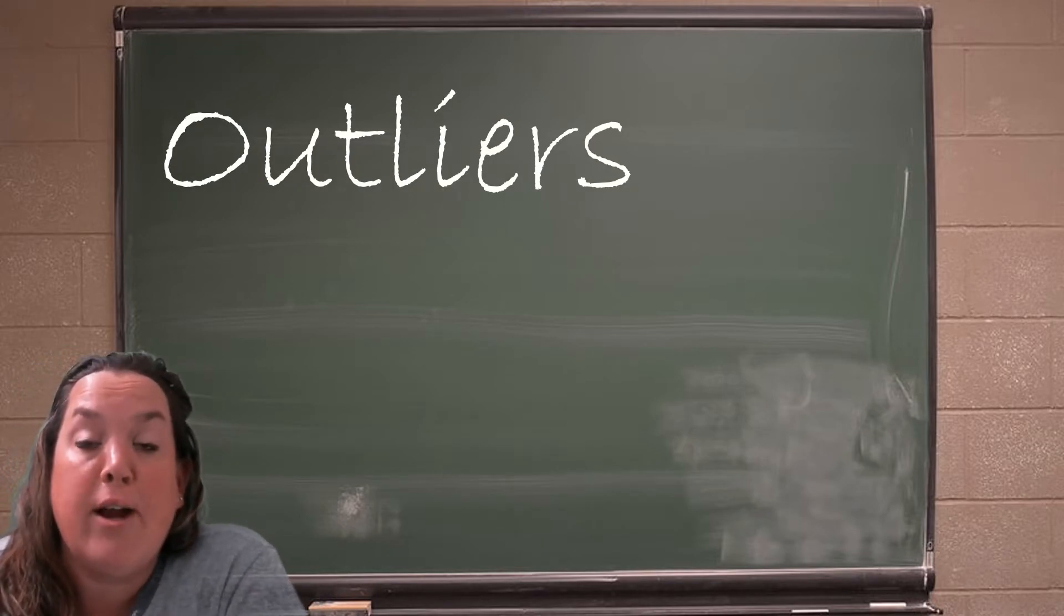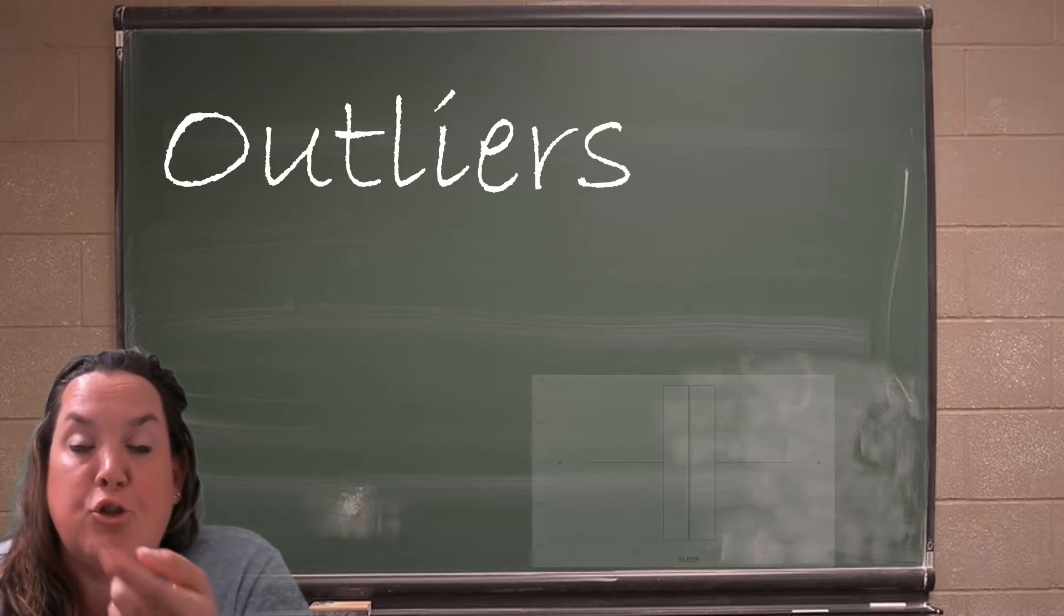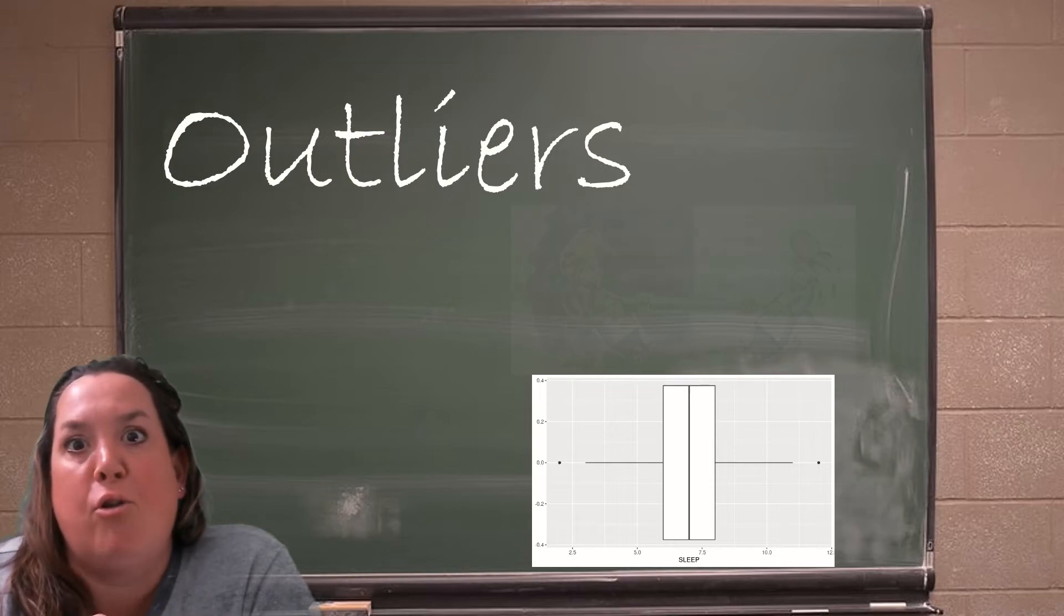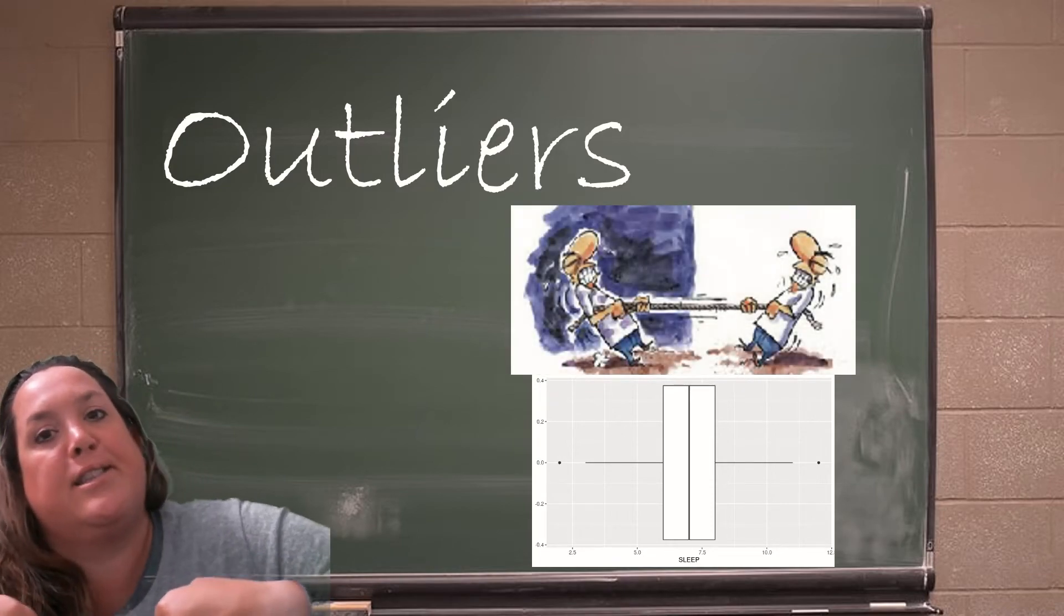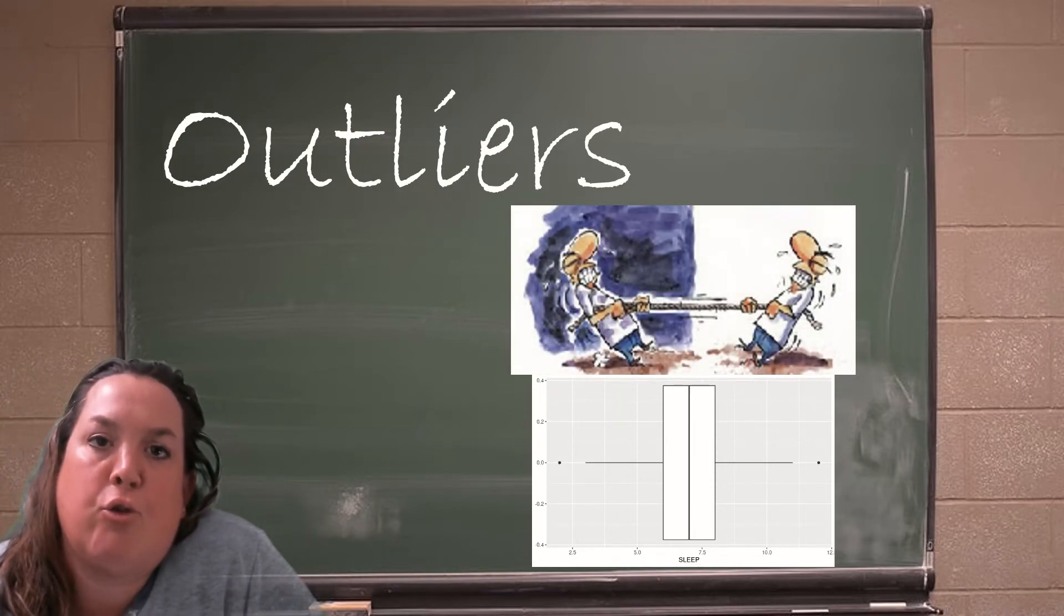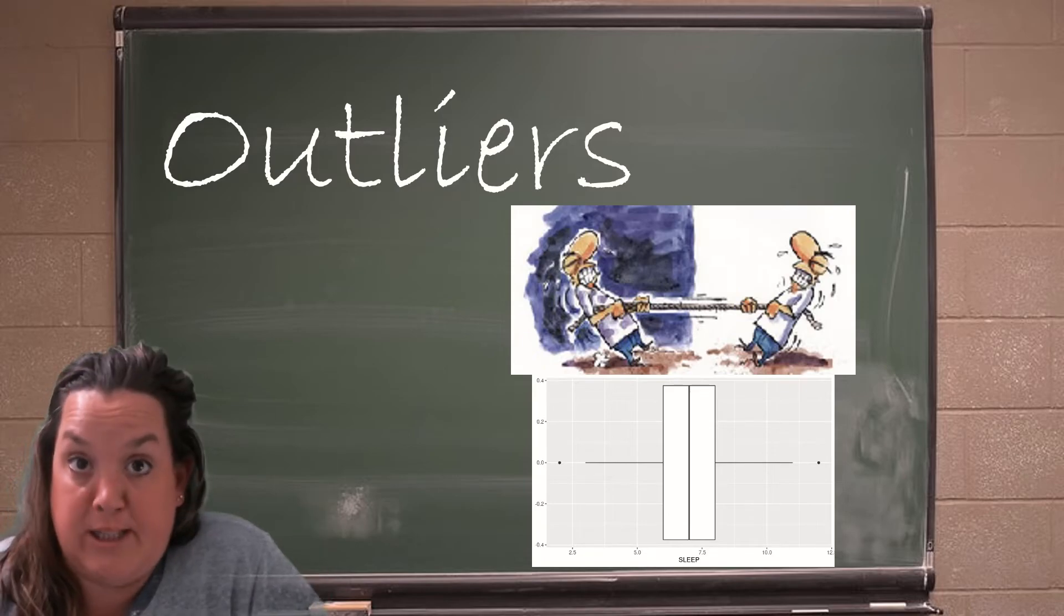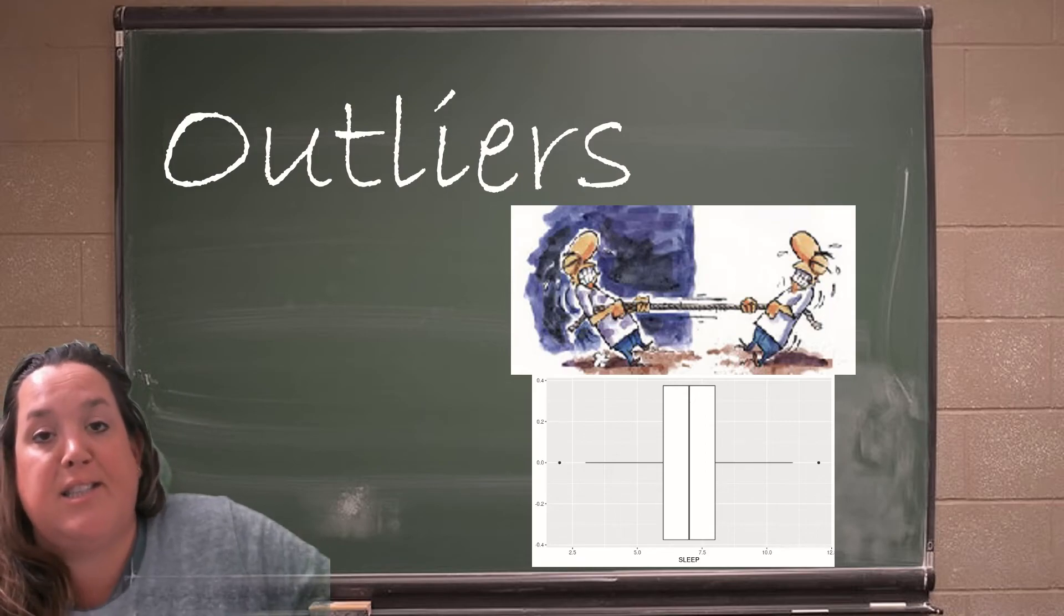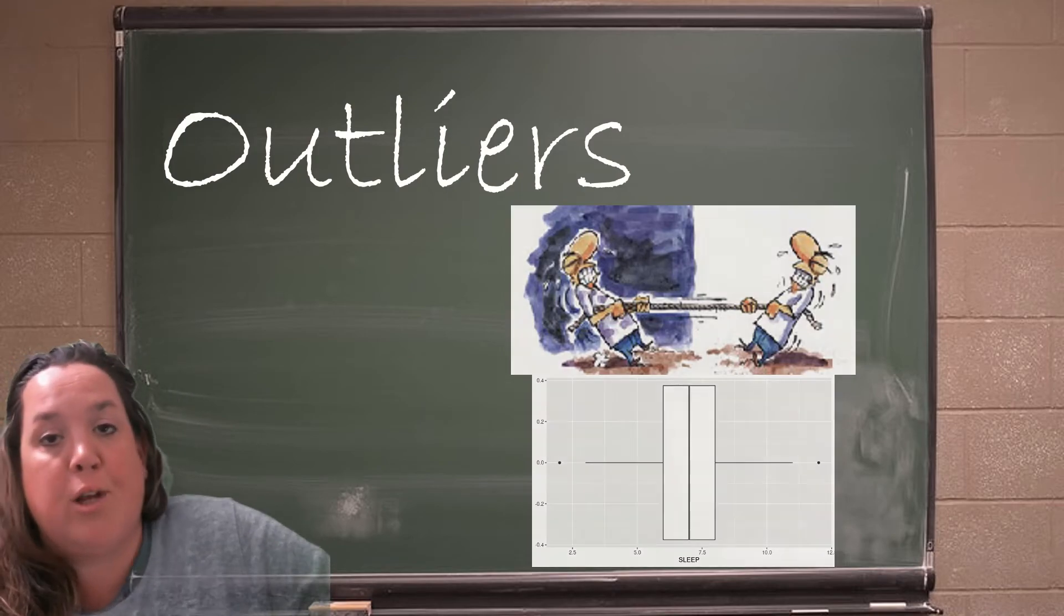So if you have outliers that are on either end of the distribution, you could think of that as like a game of tug of war. And those measurements would be pulling against each other and therefore it would still create a symmetric data set or it wouldn't as significantly impact the mean or standard deviation because it's on either direction and it's pulling equally.